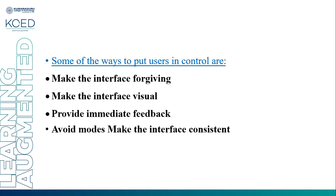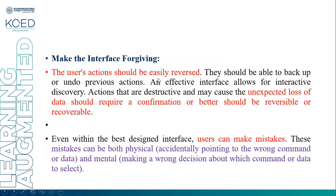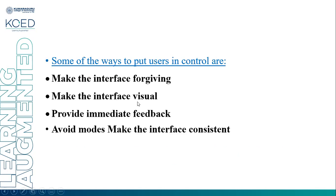Some ways to put the user in control are: make the interface forgiving — the user interface should forgive the user's mistakes; make the interface visual — the interface should be visual; provide immediate feedback — the interface should provide immediate feedback to the user; and avoid modes, making the interface consistent. These are the four important rules that help create a user-in-control experience.